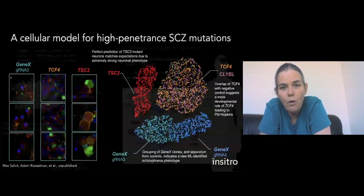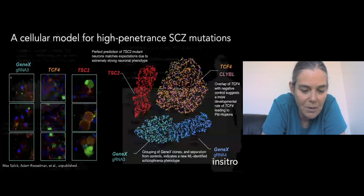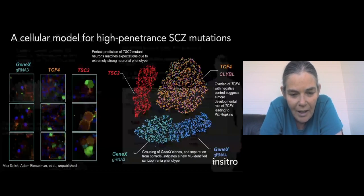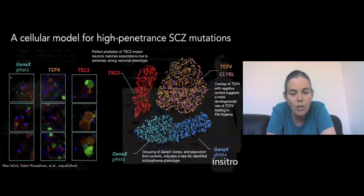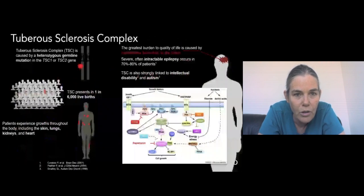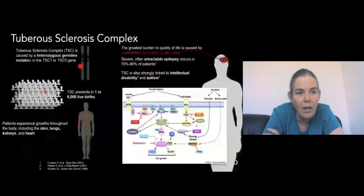So here I'm going to focus now on the first end-to-end disease model that we've done. And this is in the TSC2 mutation, which is largely replicating, but with a twist, work that's been done on TSC2. So TSC2 is a gene that's implicated in a disease that's called tuberous sclerosis complex. It's a rare disease, but it's not ultra-rare. It exists in one in 6,000 live births. And when you have that mutation, the patients exhibit growth throughout the body, including the skin, the lungs, the kidneys, the heart, and the brain.